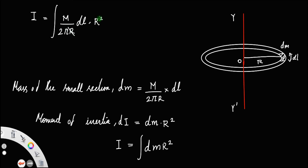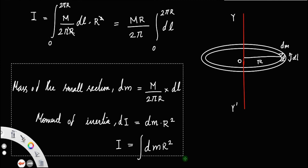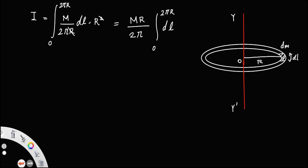You can cancel one r with r², leaving r. Since mass, radius, and 2π are constants, you can take them outside the integral. You have to put the limits: since the variable is dL, the length of the ring varies from 0 to the total length 2πr. So this will be (mr/2π) times the integral from 0 to 2πr of dL. The integral of dL is L evaluated from 0 to 2πr.